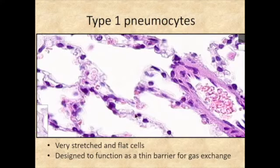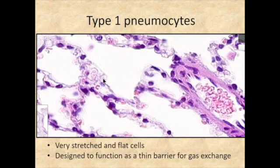The type 1 pneumocyte — here's a nucleus, sort of stretched out. You definitely have a type 1 pneumocyte along the entire border. Even if you don't have a cut through the nucleus, its cell membrane is still there. That is the cell that oxygen and carbon dioxide is going to pass through after it comes out of the endothelial cell lining the capillary.